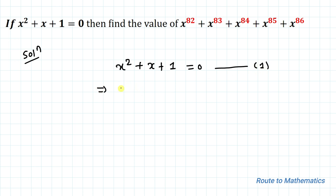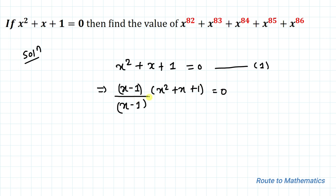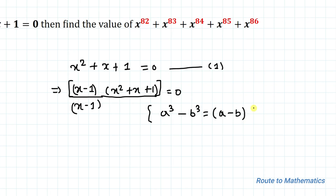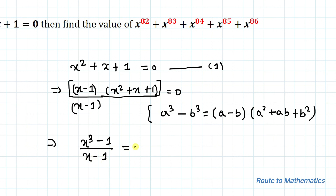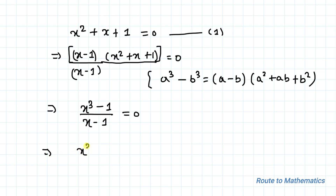In the next step, I will multiply and divide by (x minus 1) with x squared plus x plus 1 equals 0. By multiplying this expression, we apply the algebraic identity a cubed minus b cubed equals (a minus b)(a squared plus ab plus b squared). Considering a as x and b as 1, we get (x cubed minus 1) divided by (x minus 1) equals 0. By cross multiplication, x cubed minus 1 equals 0, so x cubed equals 1 — let's take this as equation 2.